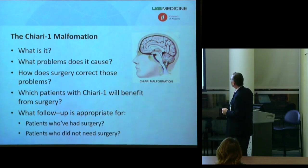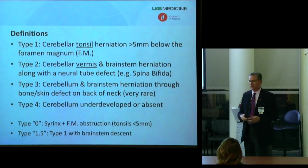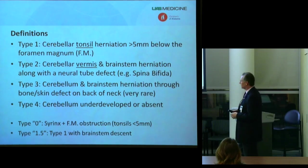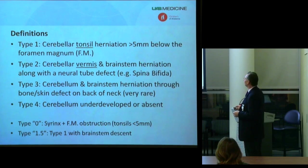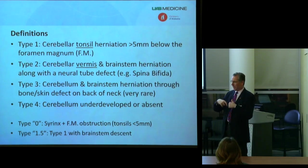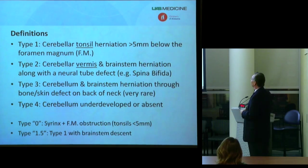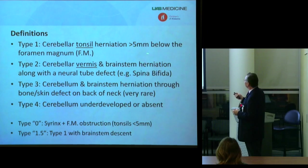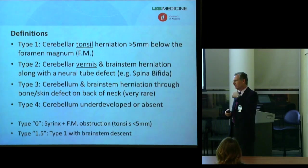The foramen magnum is the opening at the base of the skull where the skull sits on top of the spine at the top of the neck. In a Chiari malformation there's something extra hanging out of the base of the skull into the top of the spinal canal. In a Chiari 1 malformation, the brain tissue herniating through the foramen magnum is a portion of the cerebellum called the tonsils, and by radiographic definition there needs to be more than five millimeters of descent below the base of the skull.